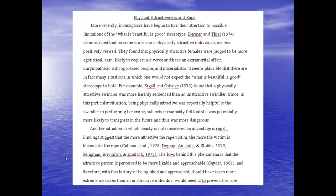And then she has another major section on physical attractiveness and rape. And at this time, why don't you take a look at how she's going about writing about each one of the research studies. More recently, investigators have begun to turn their attention to possible limitations of the what is beautiful is good stereotype. Dermer and Thiel, 1974, demonstrated that on some dimensions of physical attractiveness, individuals are less positively viewed. They found that physically attractive females were judged to be more egotistical, vain, likely to request a divorce, and have an extramarital affair. So notice how she's going about describing the research that she's reviewing. She's giving us a paragraph to a half a paragraph overview of what they did and what they found.